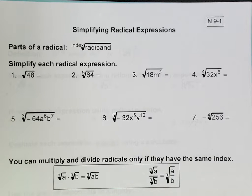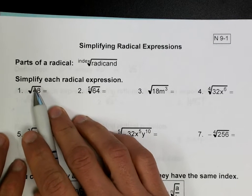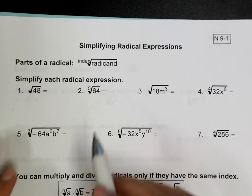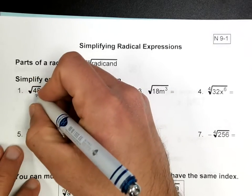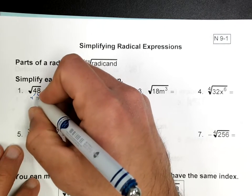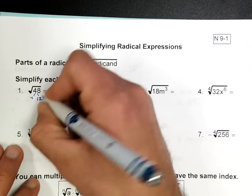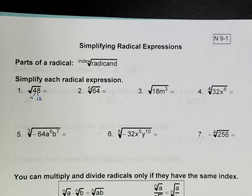Alright, now we're going to talk about simplifying radical expressions. On this one right here we have just a regular square root. So when they're asking us to simplify each radical expression, we're going to do what we've done in the past, which is we're going to break this 48 down — we're going to factor that 48 using a factoring tree.